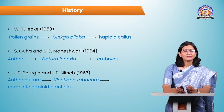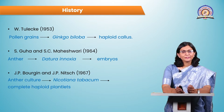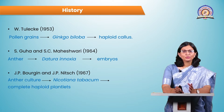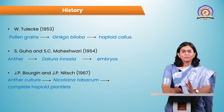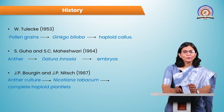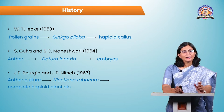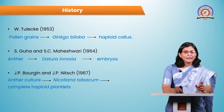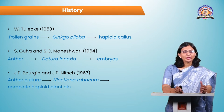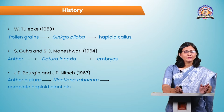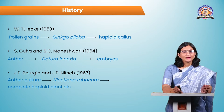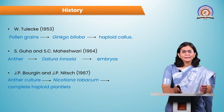Let's see the history of anther and pollen culture. W. Tulek in 1953 used pollen grains of Ginkgo biloba plant to regenerate haploid callus — the very first time pollen grains were used for developing callus. Then Guha and Maheshwari in 1964 used Datura inoxia plant anthers to regenerate embryos from the explant. Then Borjin and Nish in 1963 used anthers of Nicotiana tabacum to regenerate complete haploid plantlets.